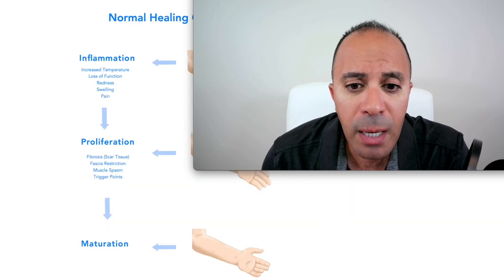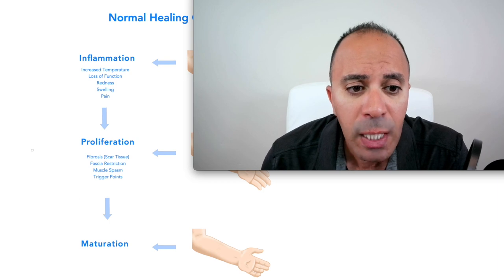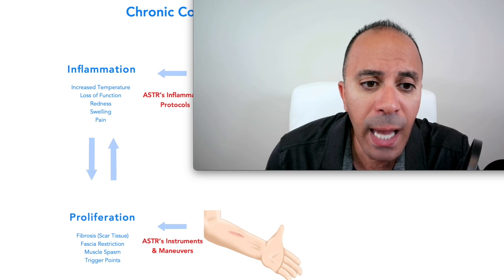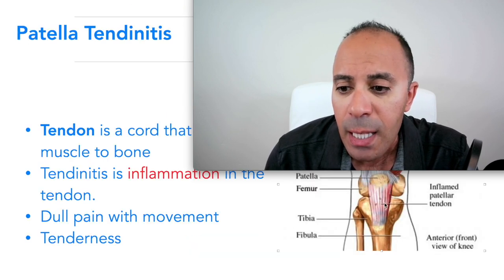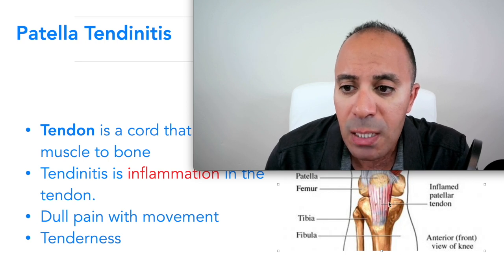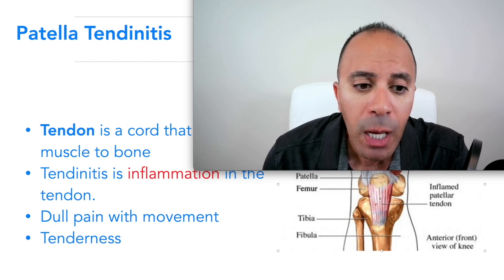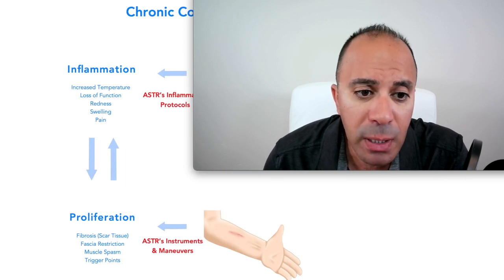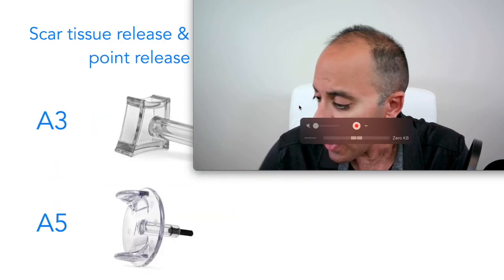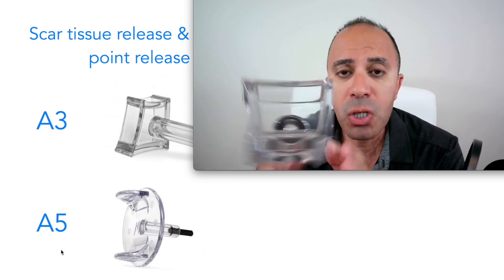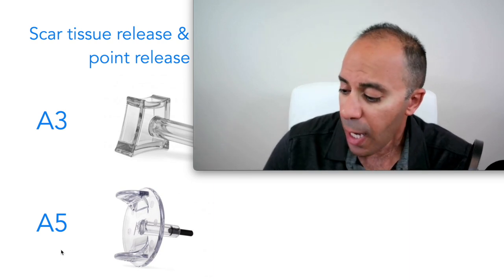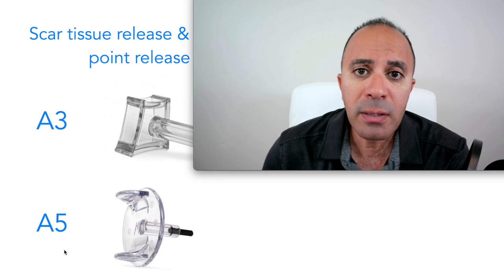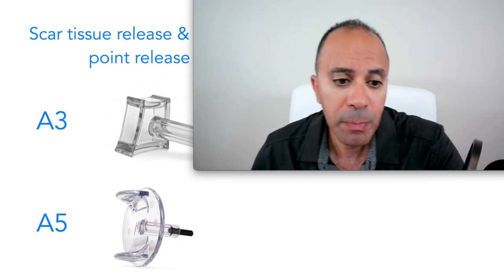Simultaneously we have to address the proliferation stage. If you're in a chronic condition, you're probably going back and forth between inflammation and proliferation — you can see the redness and scarring in the patellar tendonitis image. We have to break that scarring by working on all aspects of the proliferation stage: fibrosis, fascia restriction, muscle spasm, and trigger points. I personally use the A3 tool to work on superficial scar tissue to break it down, then the A5 to work on deep scar tissue, trigger points, and deep fascia restrictions.